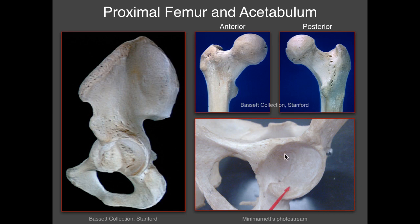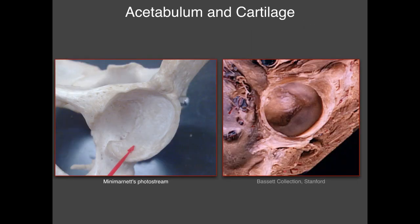It's important to know that the acetabulum is not a complete hemisphere in terms of the articular surface itself, but rather it's a C-shaped structure as shown on this image. If you look at a cadaveric image, you can see that the articular cartilage is not complete — it's not present centrally in the place called the acetabular fossa. That becomes very important on imaging, both radiography and MRI, because we don't expect to see cartilage where it's not normally supposed to be.